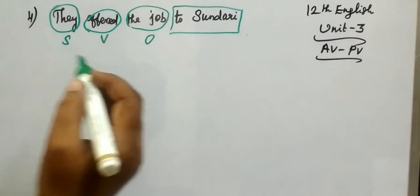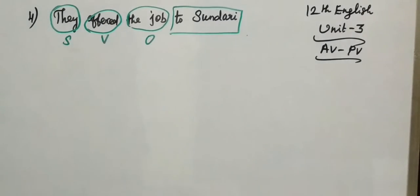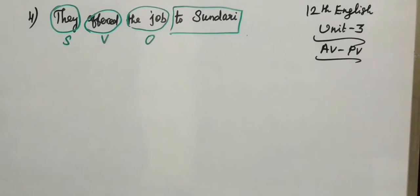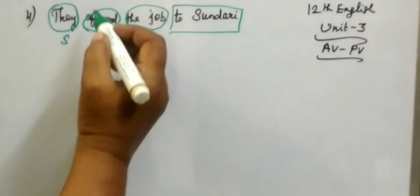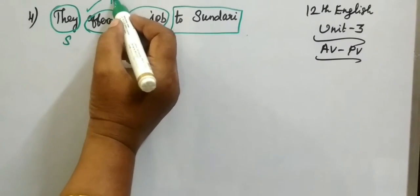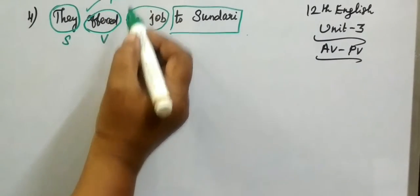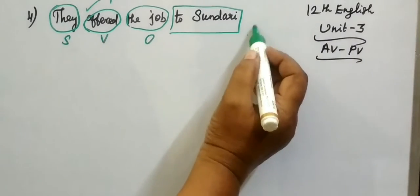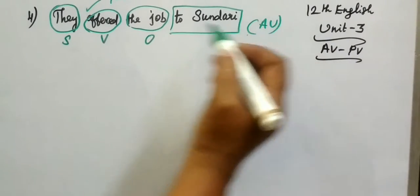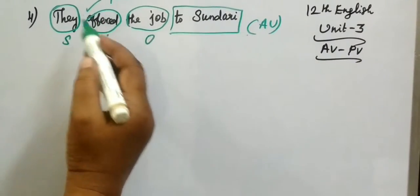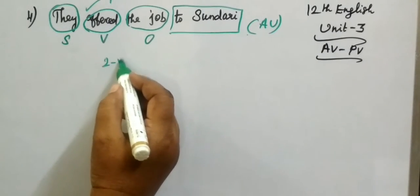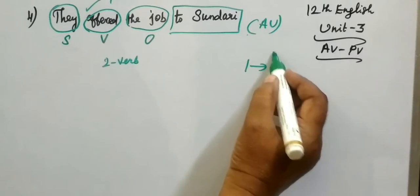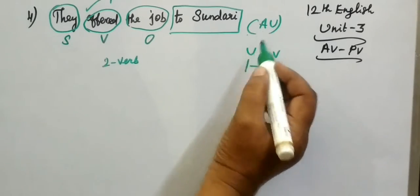You have to check whether what is given is active voice or passive voice. See the verb. If there is one verb form, it is active voice. One verb form is changed into two verb forms when converting to passive voice.